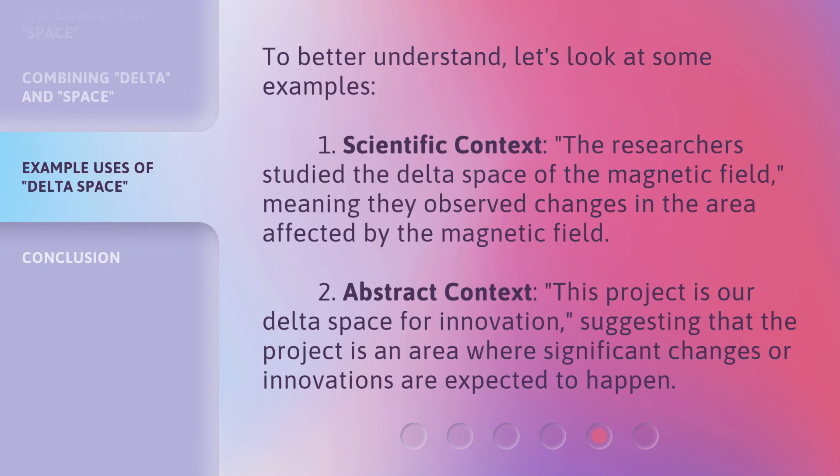To better understand, let's look at some examples. First, in a scientific context: the researchers studied the Delta space of the magnetic field, meaning they observed changes in the area affected by the magnetic field. Second, in an abstract context: this project is our Delta space for innovation, suggesting that the project is an area where significant changes or innovations are expected to happen.